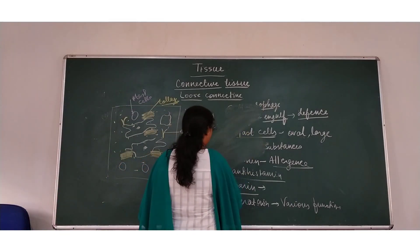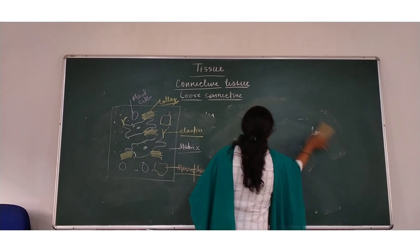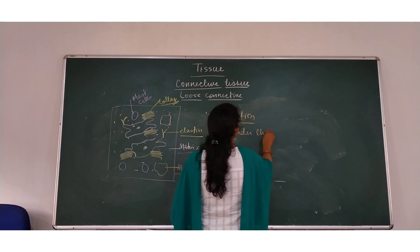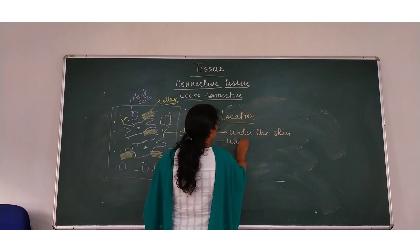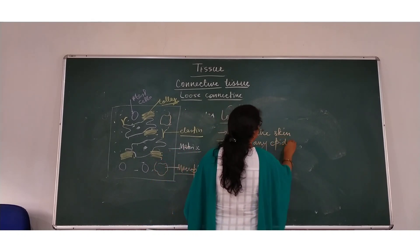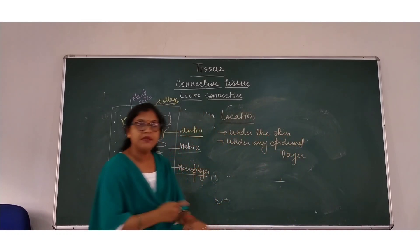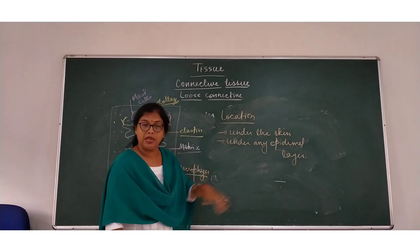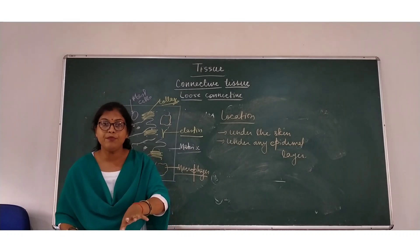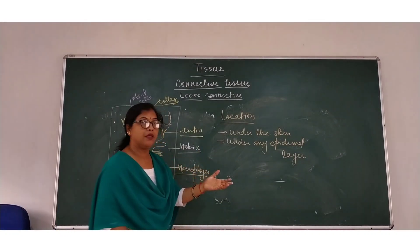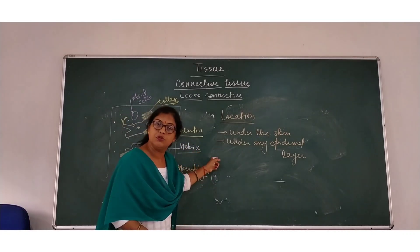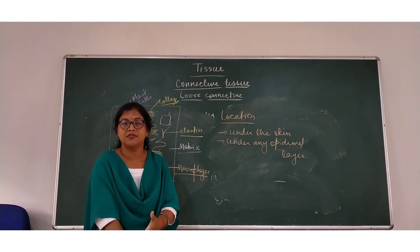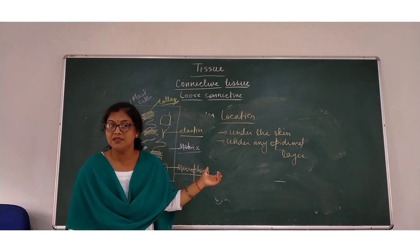Now, where are these areolar tissues found? The location is under the skin, or under any epidermal layer. Right under your skin, areolar tissues are found — both externally and internally. Inner organs are also covered by an epidermal layer, and right under those epidermal layers, areolar tissues are found as well. For example, when insects bite, we get rashes or redness on the skin, which means areolar tissue is found everywhere.